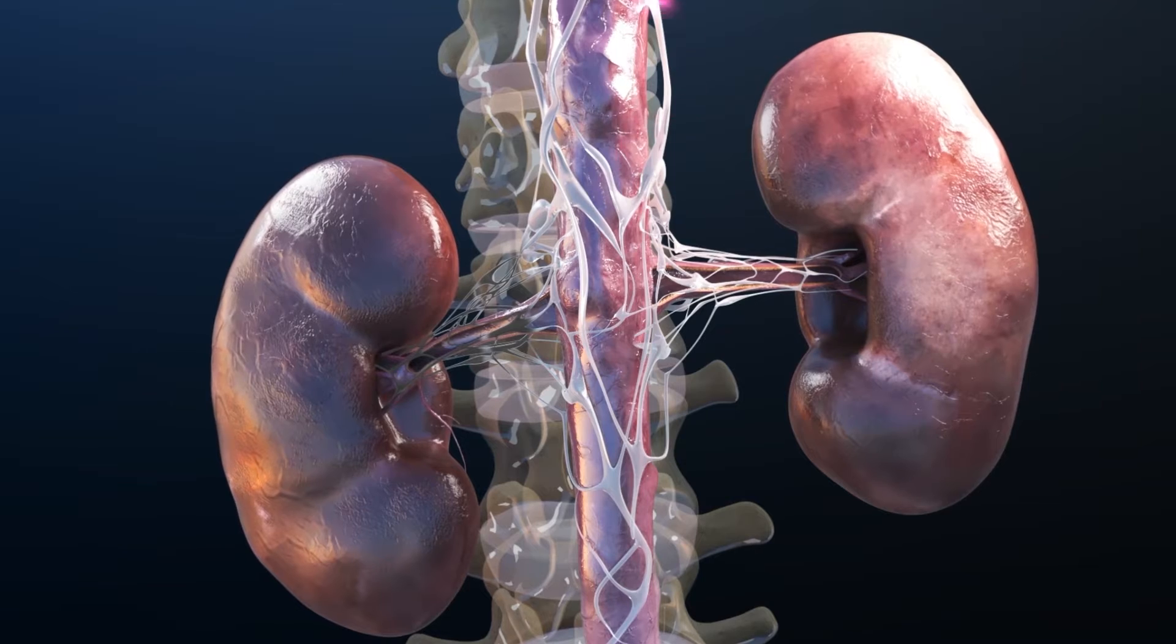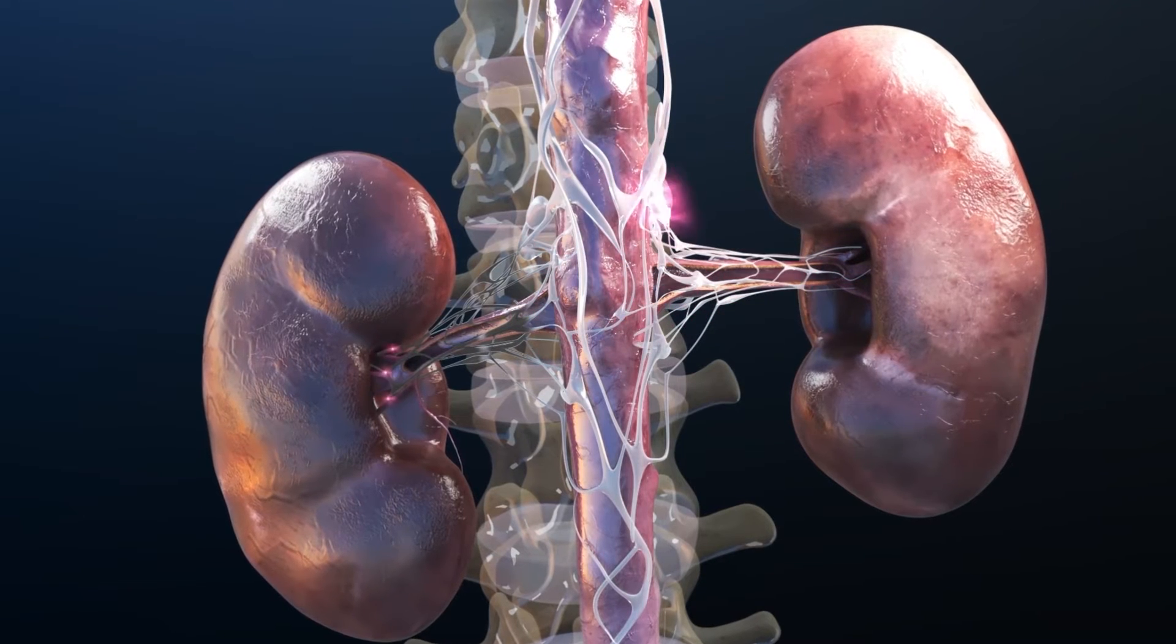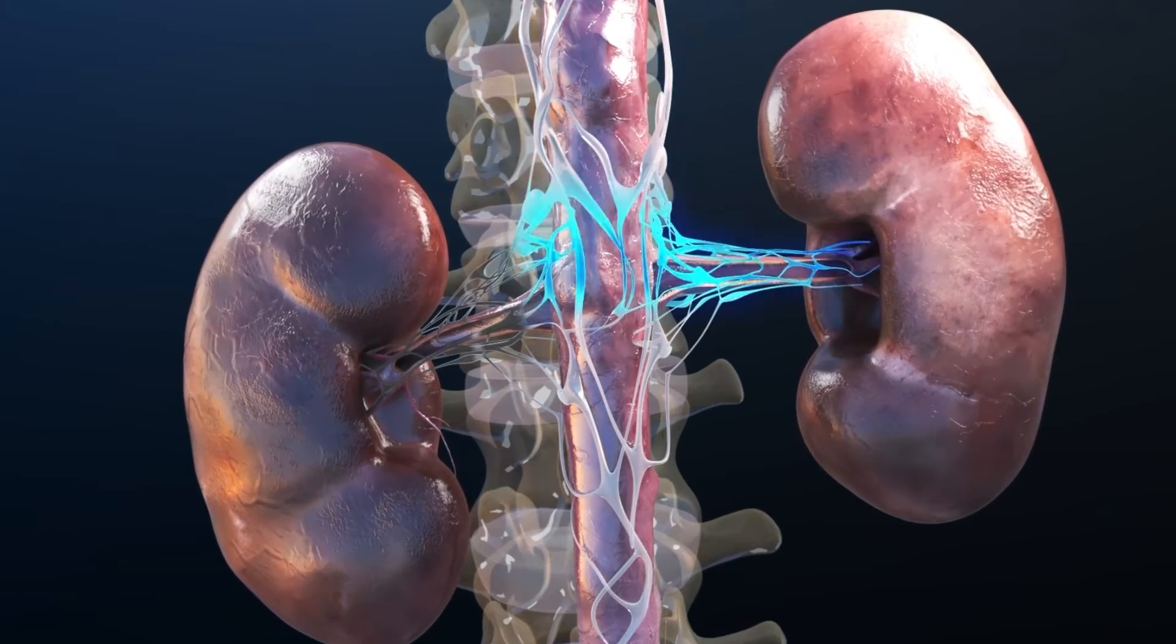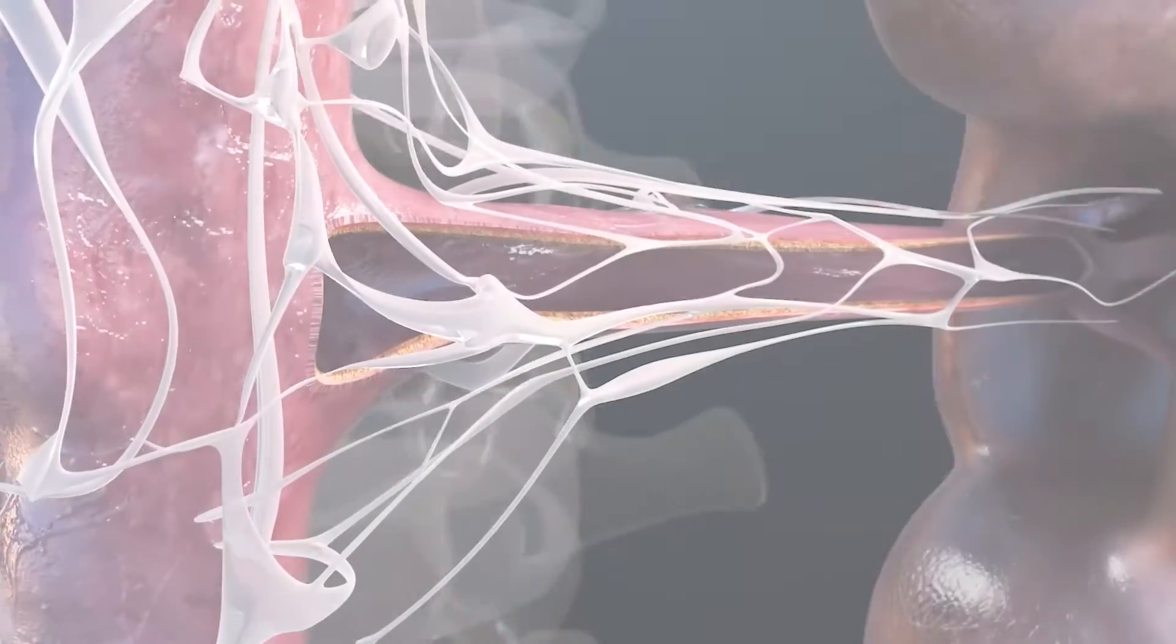As a result of delivering ultrasound energy circumferentially within the main renal arteries, sympathetic nerve activity is interrupted to achieve a lasting reduction in blood pressure.